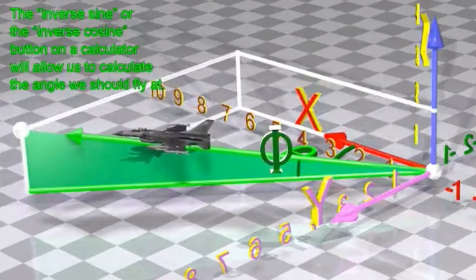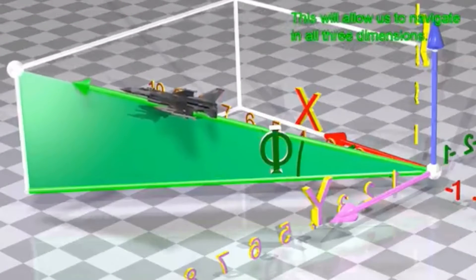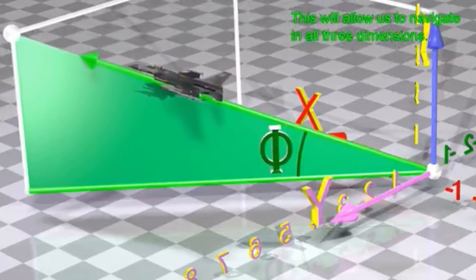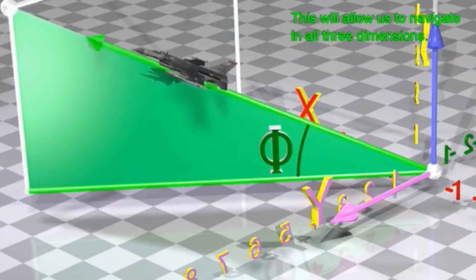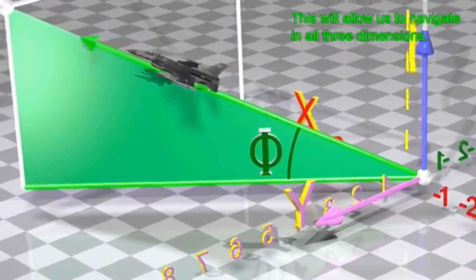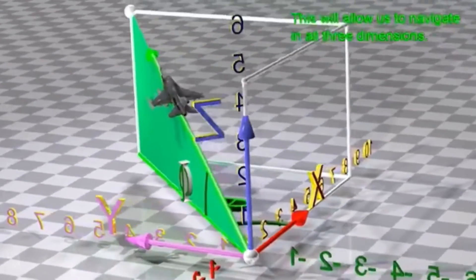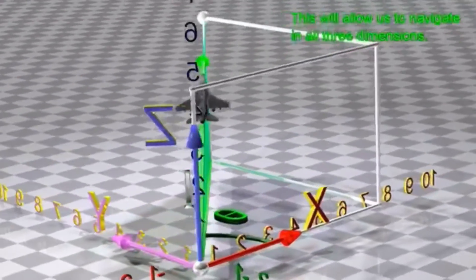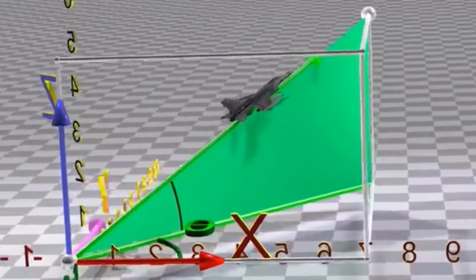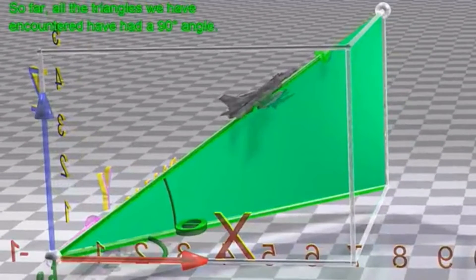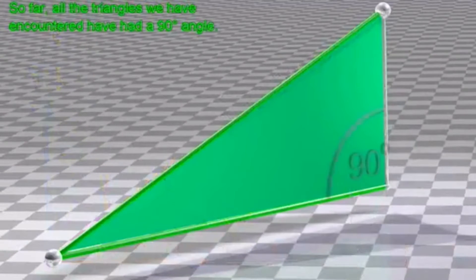This will allow us to navigate in all three dimensions. So far, all the triangles we have encountered have had a 90 degree angle.